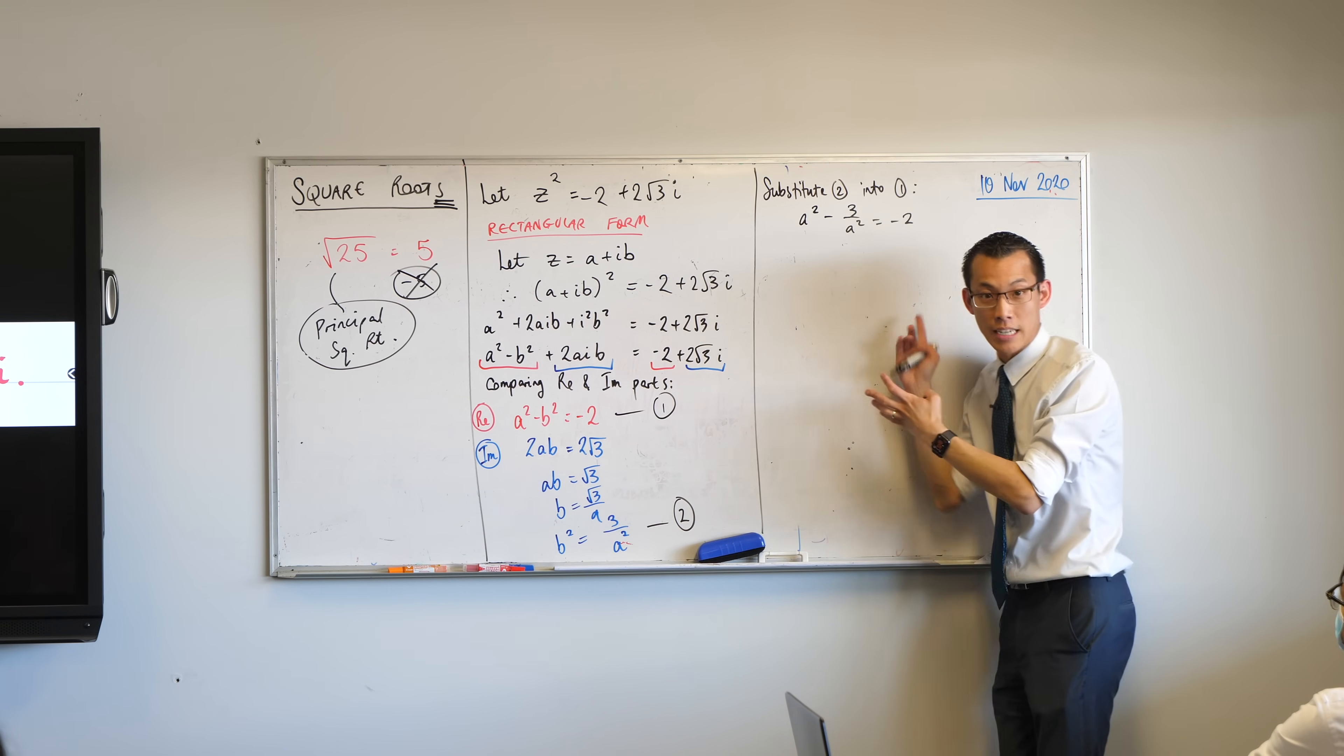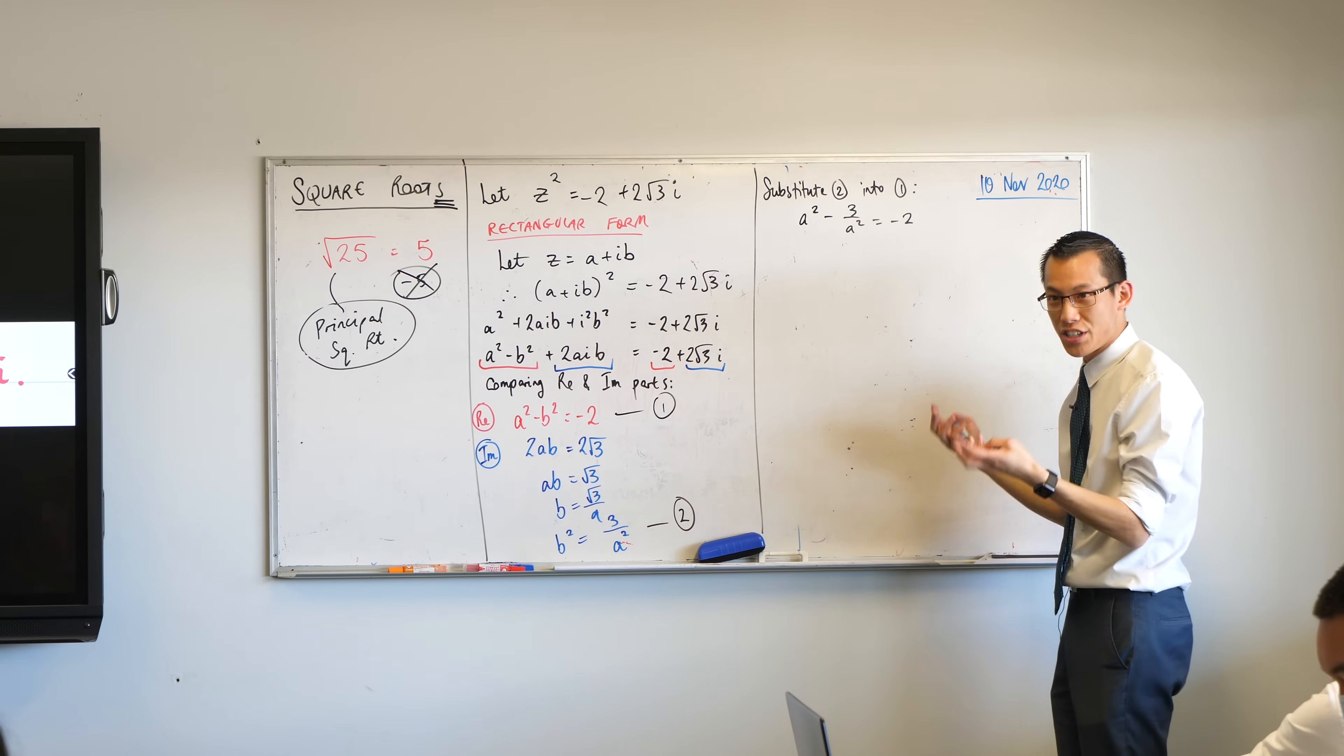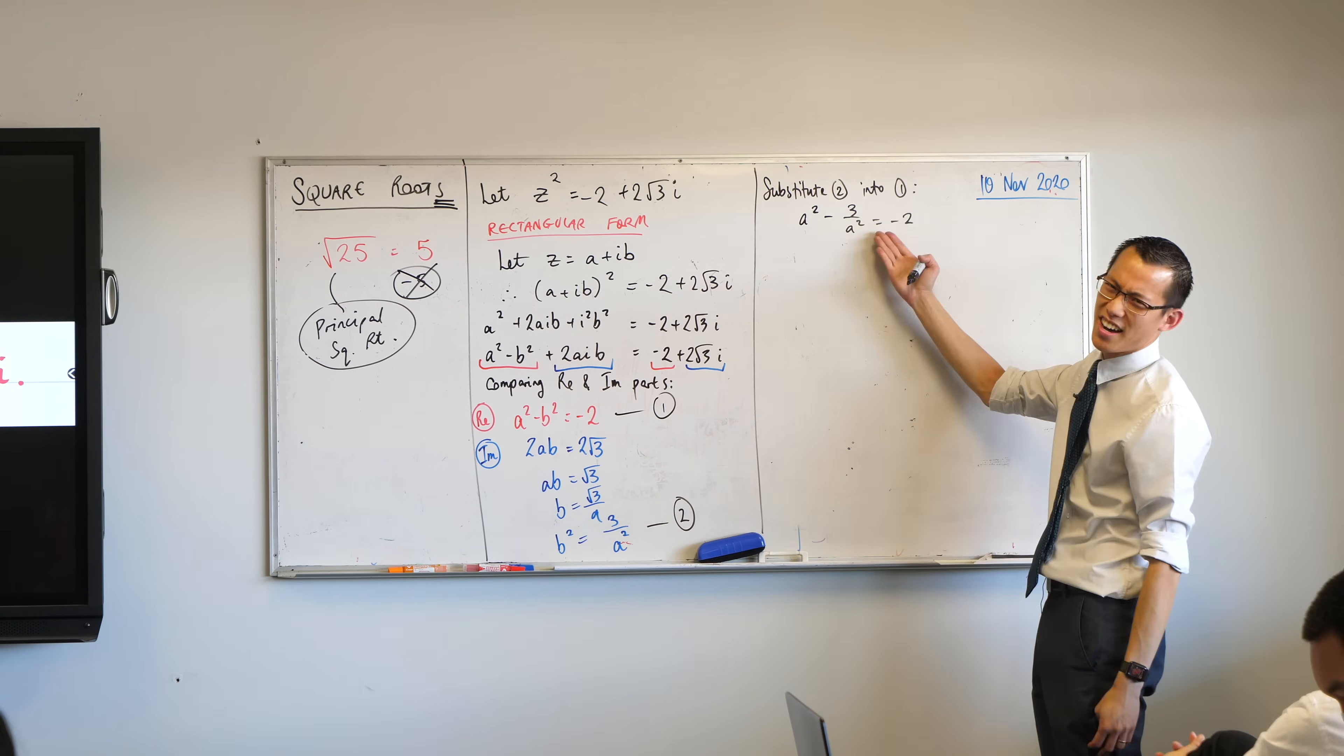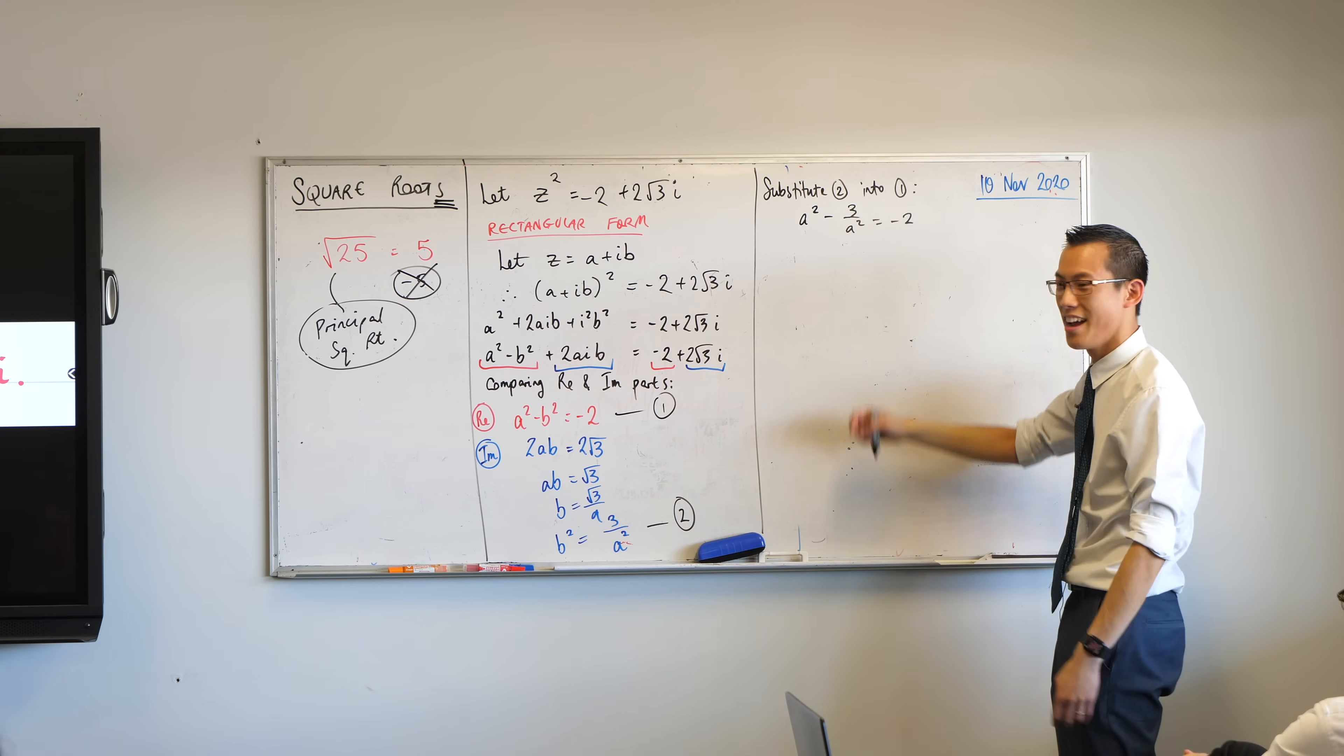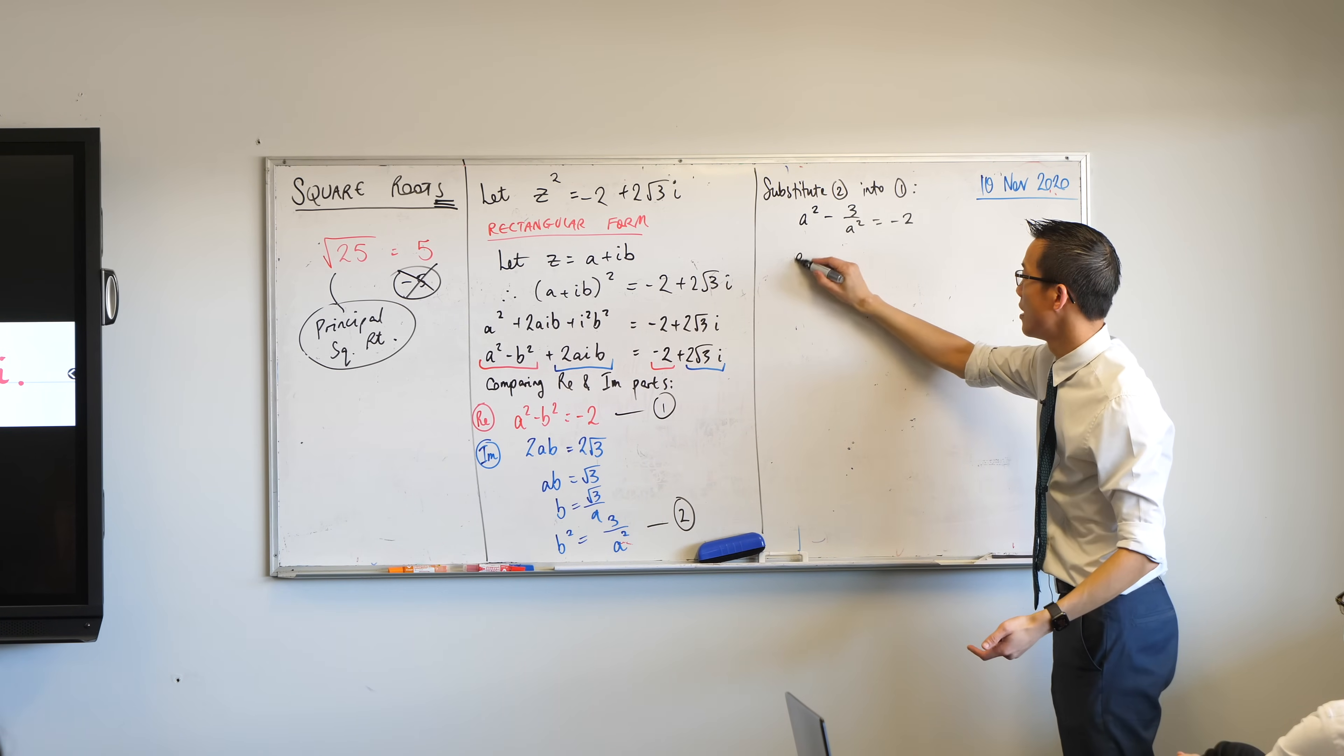What was the step that you did to get from here? Did you multiply by something? You're like, ah, fractions, gross. You can get rid of the fractions by multiplying by a squared. So you get this.